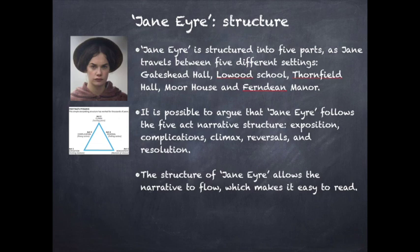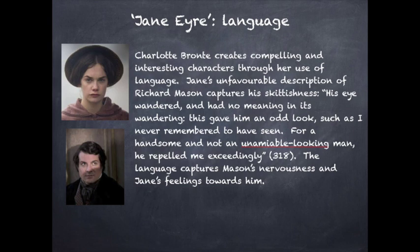Charlotte Bronte creates compelling and interesting characters through her use of language. Jane's unfavourable description of Richard Mason captures his skittishness: 'His eye wandered and had no meaning in its wandering. This gave him an odd look, such as I never remember to have seen. For a handsome and unamiable looking man, he repelled me exceedingly.' The language captures Mason's nervousness and also Jane's feelings towards him.